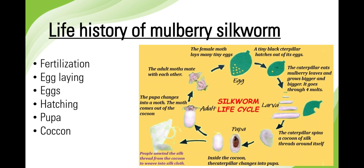After the first, second, third, and fourth molting, the caterpillars change into second, third, fourth, and fifth instar respectively. It takes about 21 to 25 days after hatching. The full-grown caterpillar is 7.5 centimeters in length. It develops salivary glands, stops feeding, and undergoes pupation.